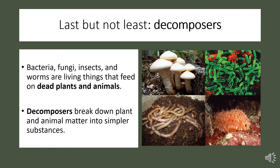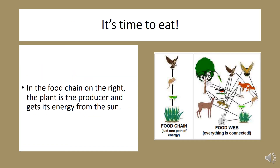Last but not least, we have decomposers. Decomposers are living things such as bacteria, fungi, insects, and worms that feed on plants and animals that have died, breaking down the plant and animal matter into simpler substances. Now that we know the three things needed in a food chain, let's look at the food chain on the right.